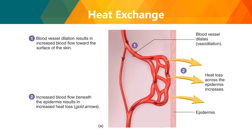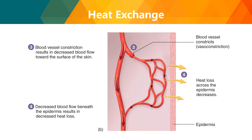Blood vessel dilation (vasodilation) results in increased blood flow toward the skin surface, increasing heat loss through the dermis and epidermis. Blood vessel constriction results in decreased blood flow toward the skin surface, reducing heat loss and retaining warmth. This is the heat exchange mechanism regulated by the skin.